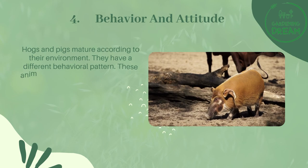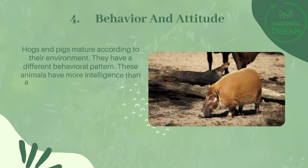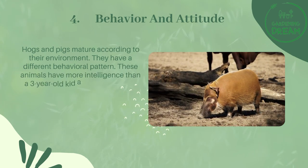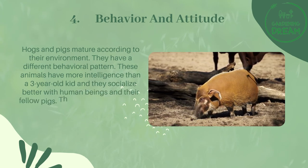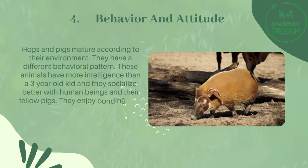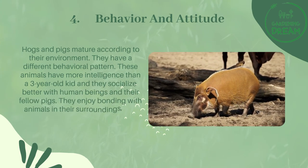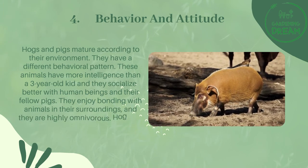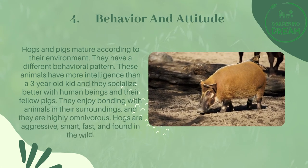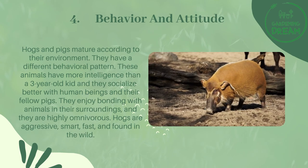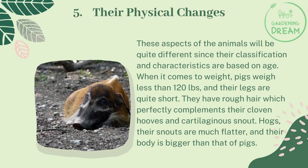Hogs and pigs mature according to their environment and have different behavioral patterns. These animals have more intelligence than a three-year-old child and socialize better with human beings and fellow pigs. They enjoy bonding with animals in their surroundings and are highly omnivorous. Hogs, however, are aggressive, smart, fast, and are found in the wild.